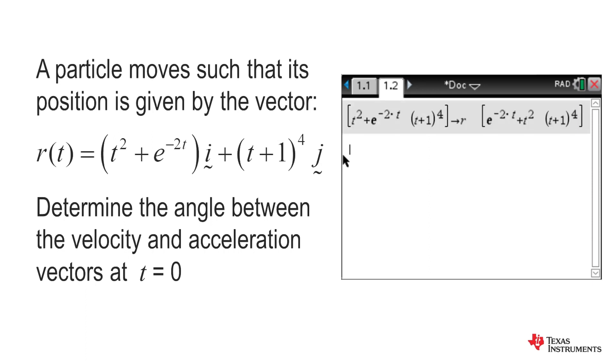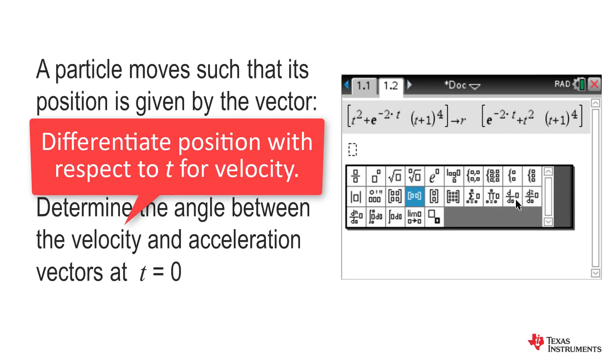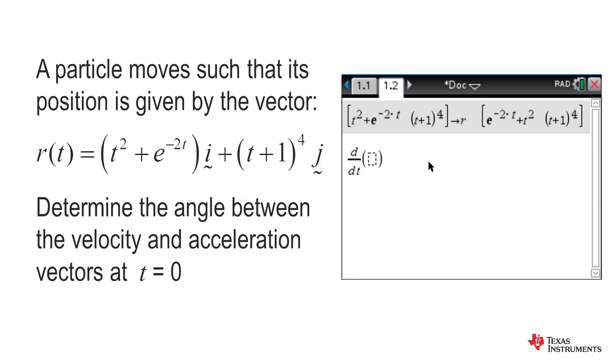If we wish the velocity, we can use the template for differentiation. So we are differentiating the position vector, but we don't want the derivative in terms of t. We are after the velocity when t is equal to zero. So it is minus 2 and 4, and similarly, we can store it as the velocity vector.